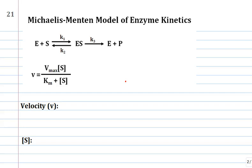An enzyme will bind a substrate and form an enzyme-substrate complex. There is a rate constant that defines the formation of the enzyme-substrate complex, and a rate constant that describes the breakup of the enzyme-substrate complex back to the free enzyme plus substrate. Sometimes the enzyme-substrate complex proceeds through a transition state onto the product and then back to the free enzyme. The rate constant that describes that is k3, also called kcat, the catalytic rate constant.